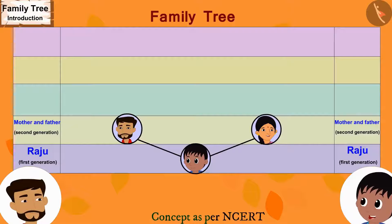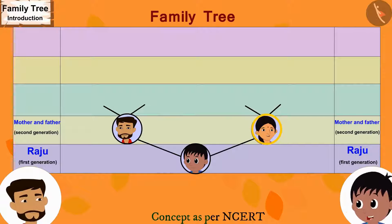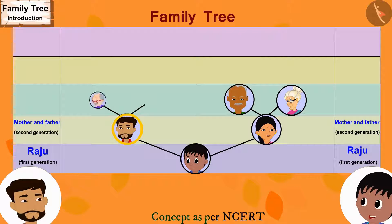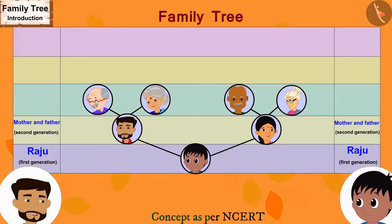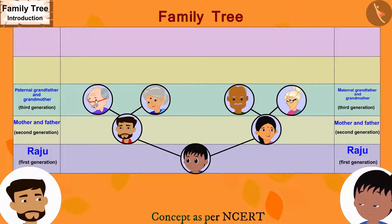Raju correctly answers: you have to draw two lines each above your name and mother's name. Above mother's name, write maternal grandfather and grandmother's names. Above father's name, write paternal grandfather and grandmother's names. The father confirms this is correct and writes the names of all four grandparents on the family tree.